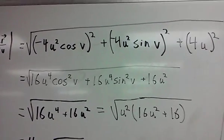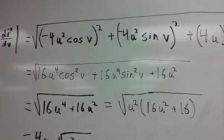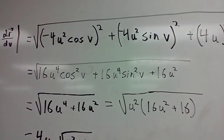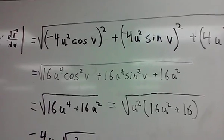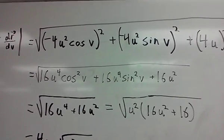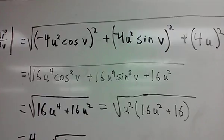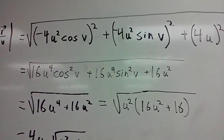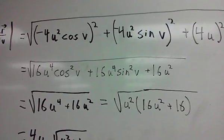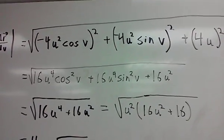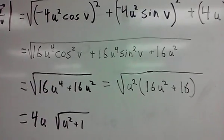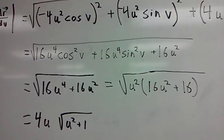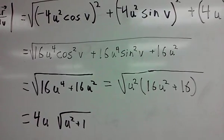And now we have our sines and cosines, again, that we can combine up to being 1. So we have 16 times u to the 4th, which is times 1, plus 16u squared, which is left from above. We can actually factor out the u squared out of this. You can actually factor out a 16 as well. And that gives you an outside 4u times the square root of u squared plus 1.